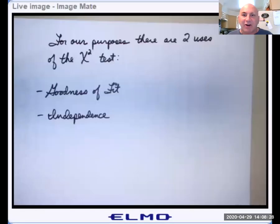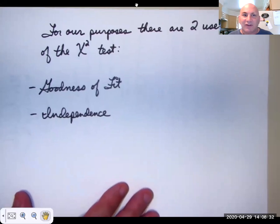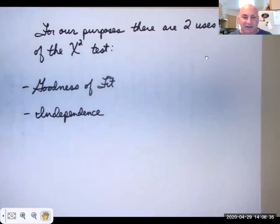So now let's get into our lesson for today. As I've said, for our purposes, there are going to be two uses of the chi-squared test. One is the chi-squared goodness of fit test, which we're going to use today, learn about today. And the second is the chi-squared test for independence. Let's start with the goodness of fit test.